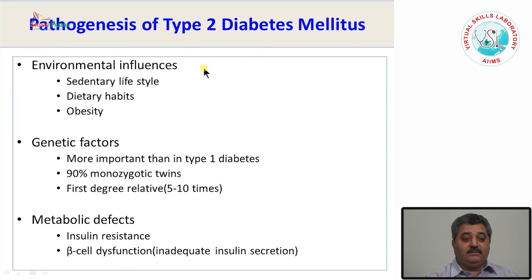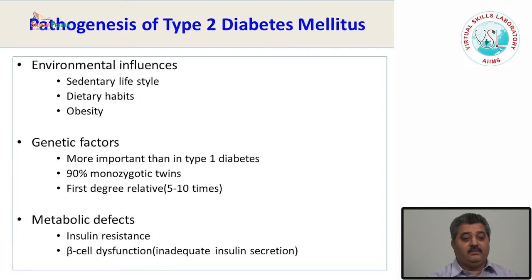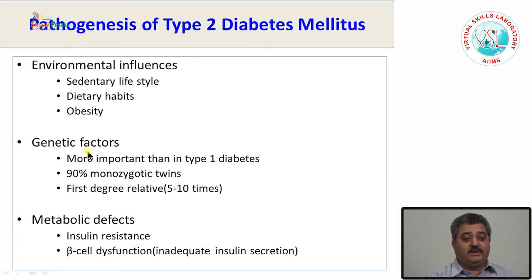In type 2 diabetes mellitus, genetic factors, environmental influences, and metabolic defects may be involved. The most important environmental factor is obesity and lifestyle — sedentary lifestyle, dietary habits, and junk food intake make people more prone to type 2 diabetes. There is a strong genetic predisposition: more than 90% of monozygotic twins develop diabetes mellitus, and first-degree relatives have 5–10 times higher chances of type 2 diabetes.